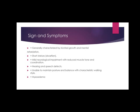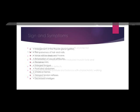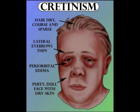Signs and symptoms include stunted growth and mental retardation, short stature also called dwarfism, mild neurological impairment with reduced muscle tone and coordination, hearing and speech defects, inability to maintain posture and balance with a characteristic walking style, myxedema, enlargement of the thyroid gland or goiter, sparseness of hair and nails, deep and hoarse voice, and retardation of sexual attributes, thickened skin, enlarged tongue, protruded abdomen, umbilical hernia, delayed tendon reflexes, and decreased intelligence.